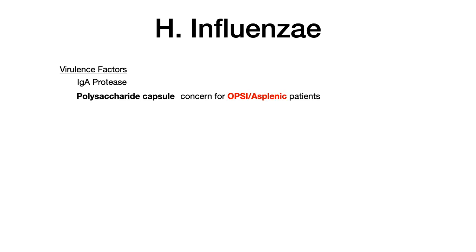Regarding virulence factors, if you've watched the recent Neisseria video, this isn't a big surprise because it's similar. First, we have IgA protease. IgA is very important for immunity and defense at mucosal surfaces, so bacteria that have IgA protease and can cleave that defense will cause infections at mucosal surfaces. As you'll see, H. influenzae causes epiglottitis, otitis media, sinusitis, and pneumonia — basically upper respiratory infections — gaining entry at those mucosal surfaces.